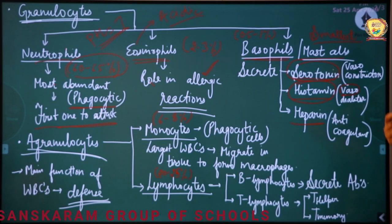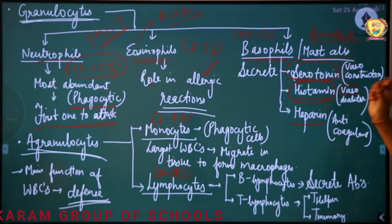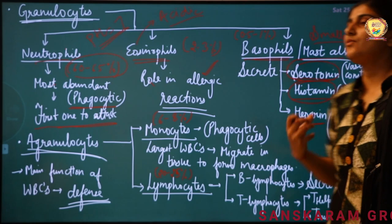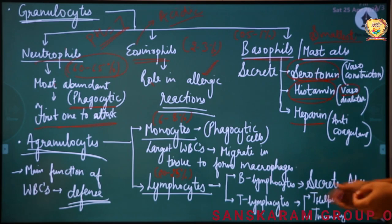Sometimes when there is an injury, blood flows from the body. To prevent that, serotonin is released so that blood vessels constrict and blood flow in that area decreases. When there is an infection in the body, more WBCs are needed to fight the infection, so more blood is required — histamine is secreted, which increases the blood vessel diameter so that more blood can flow.